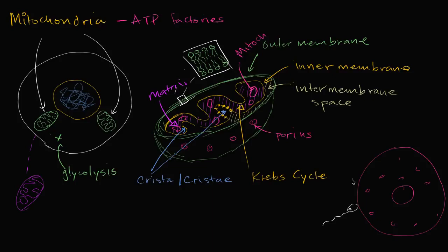Because mitochondria have their own DNA, they're able to synthesize some of their own RNA and their own ribosomes, so they also have ribosomes inside them. But they don't synthesize all of the proteins found in mitochondria — a lot of those are still coded for by your nuclear DNA and are actually synthesized outside the mitochondria, then make their way in.